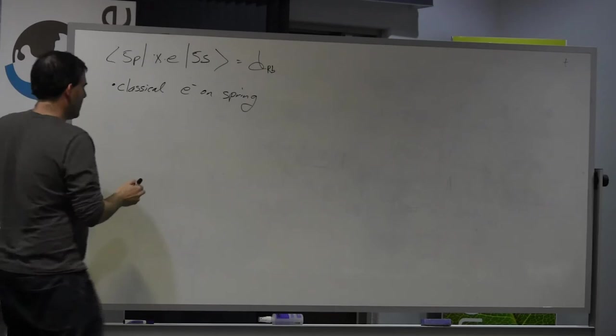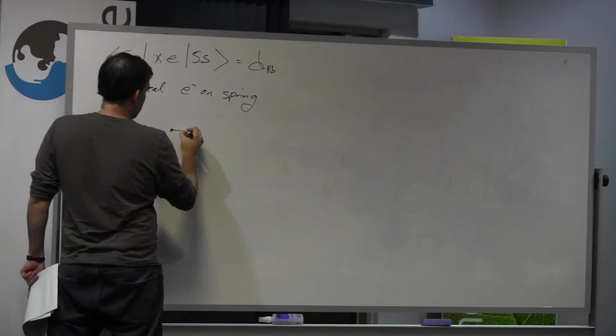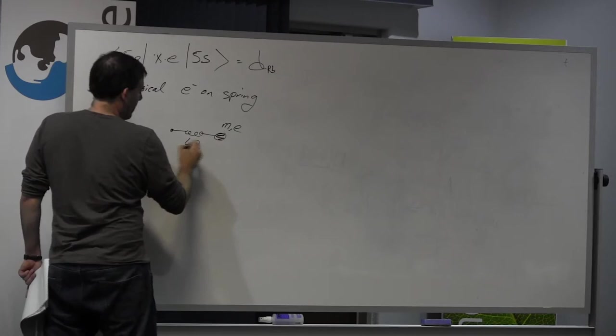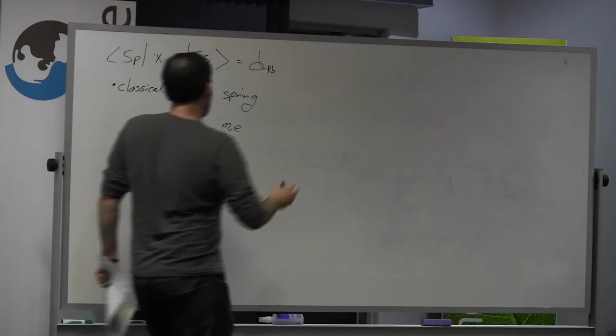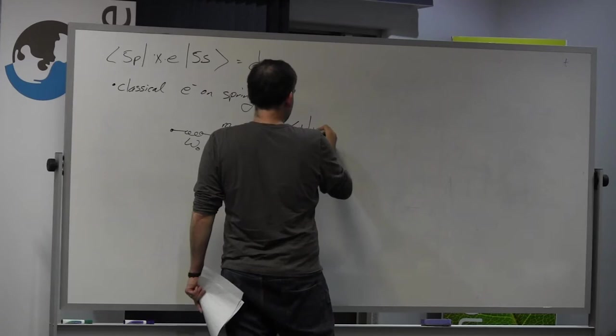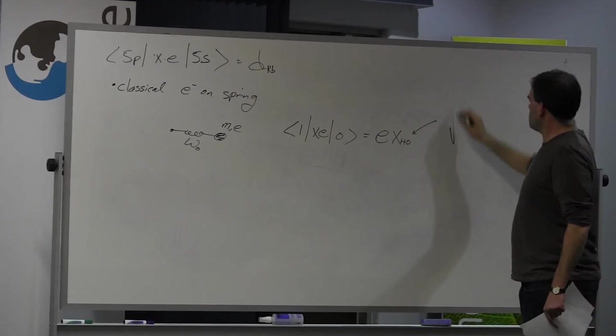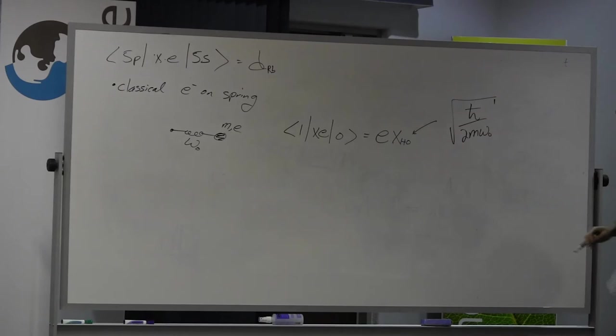So now you're going to approximate that the atom, instead of having that kind of icky structure over there, is actually one where there's a spring, and on the end of the spring, there's something with the mass of the electron, and the charge of the electron. And this spring is set so that it gives you the correct resonance frequency. Now it's pretty easy to go ahead and calculate the dipole moment between the first excited state of this oscillator and the ground state. And it's just going to be E times the harmonic oscillator length. With this harmonic oscillator length, if you recall, it looks like this.